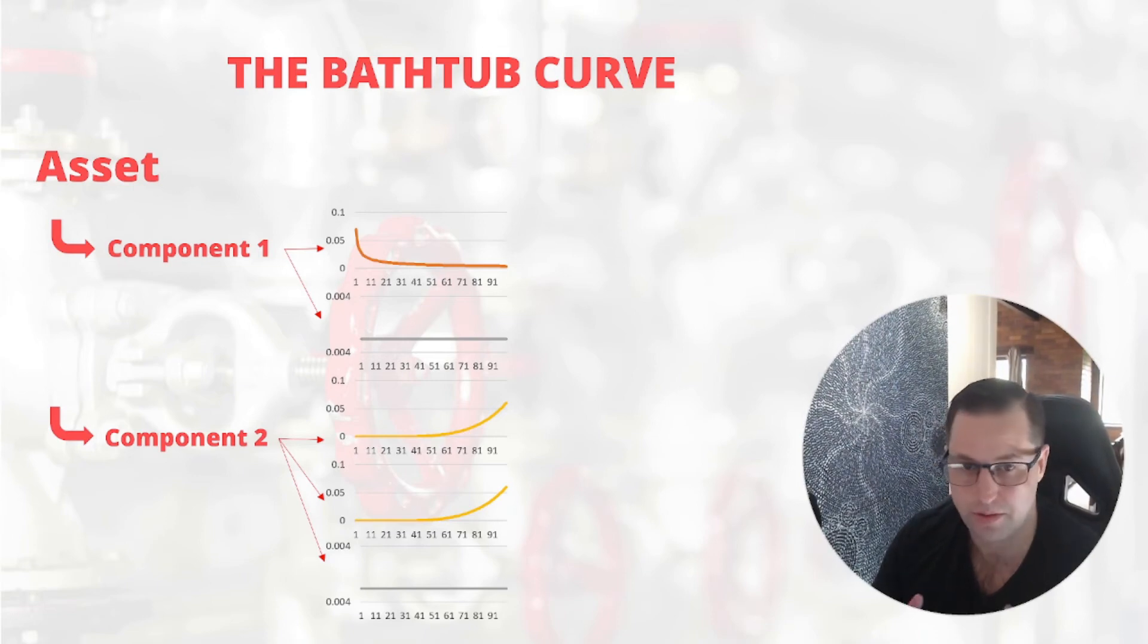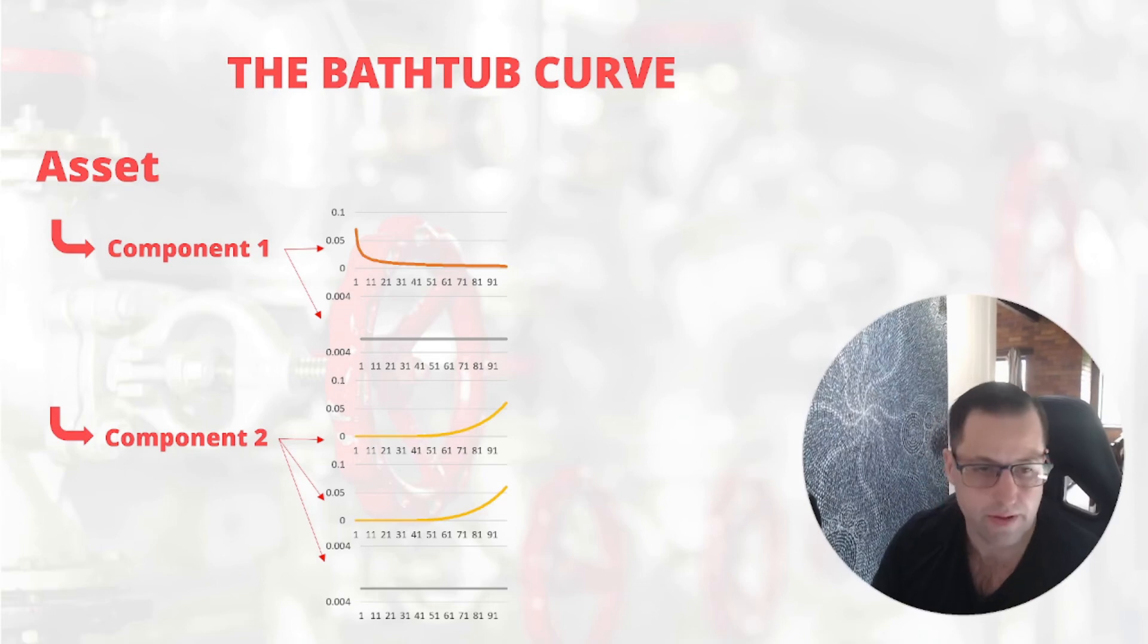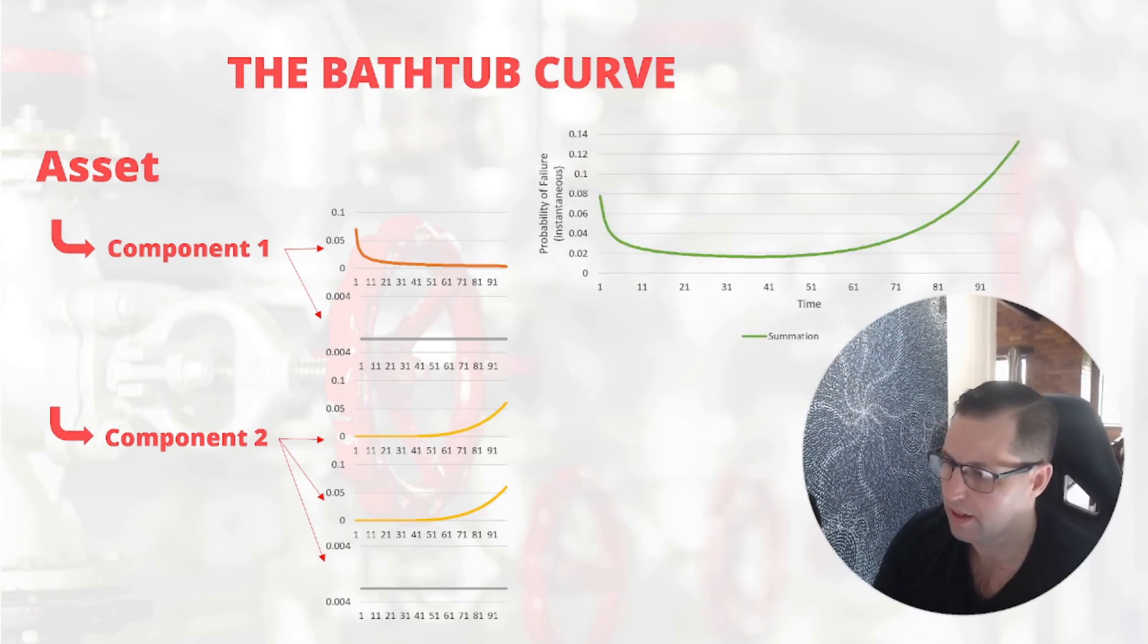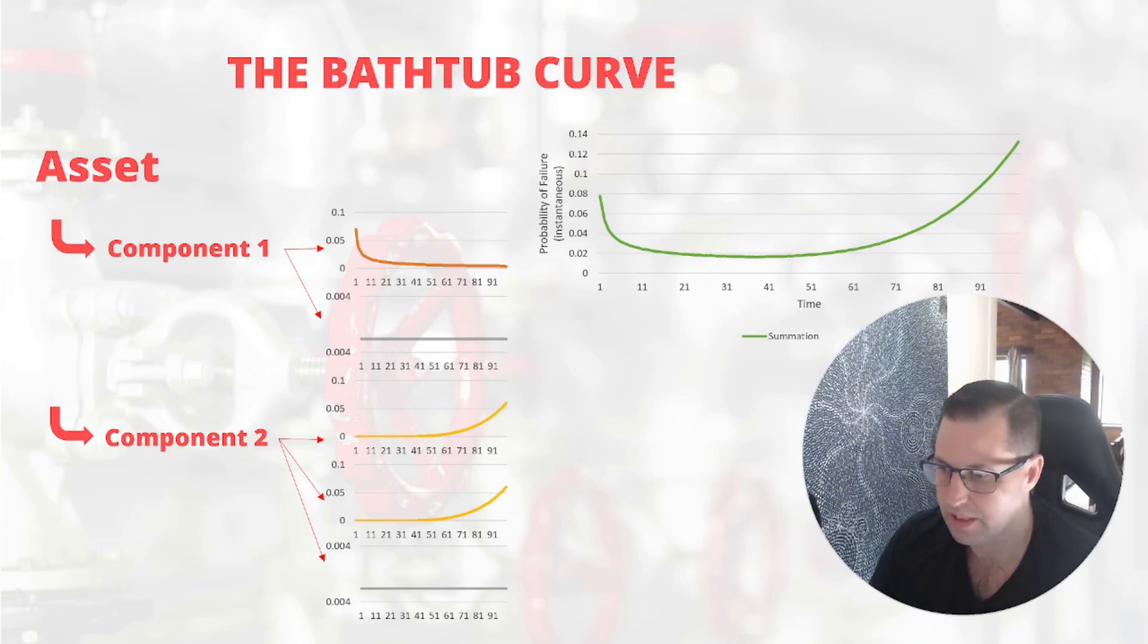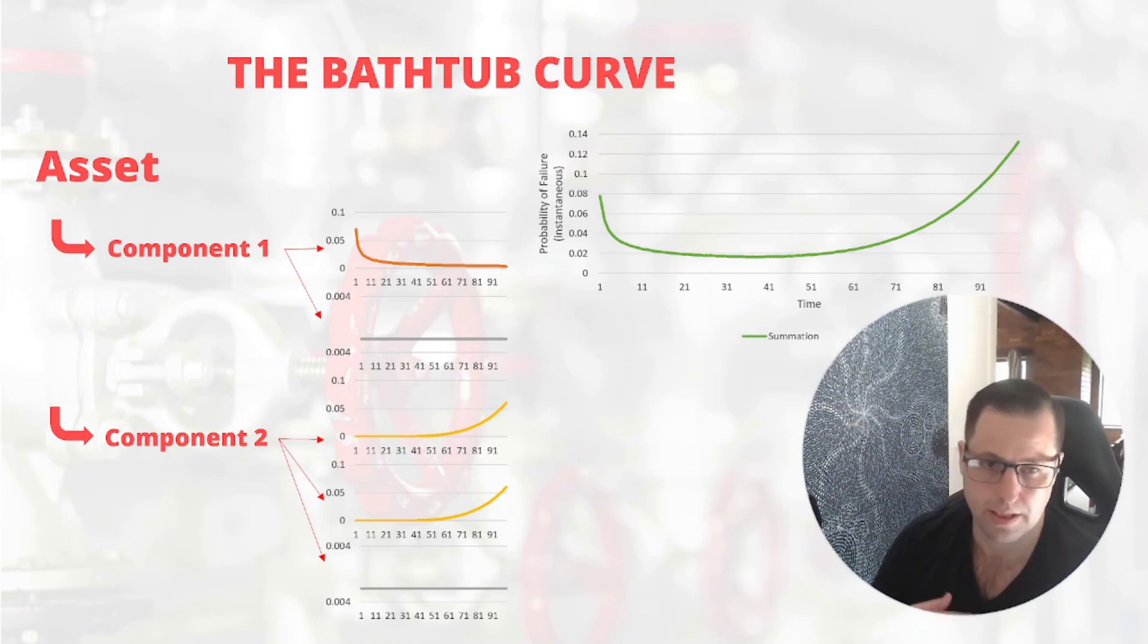If we took that all the way up to an asset level and aggregated everything underneath it, we would get a curve that looks like this. It's very similar to the bathtub curve that we showed before.